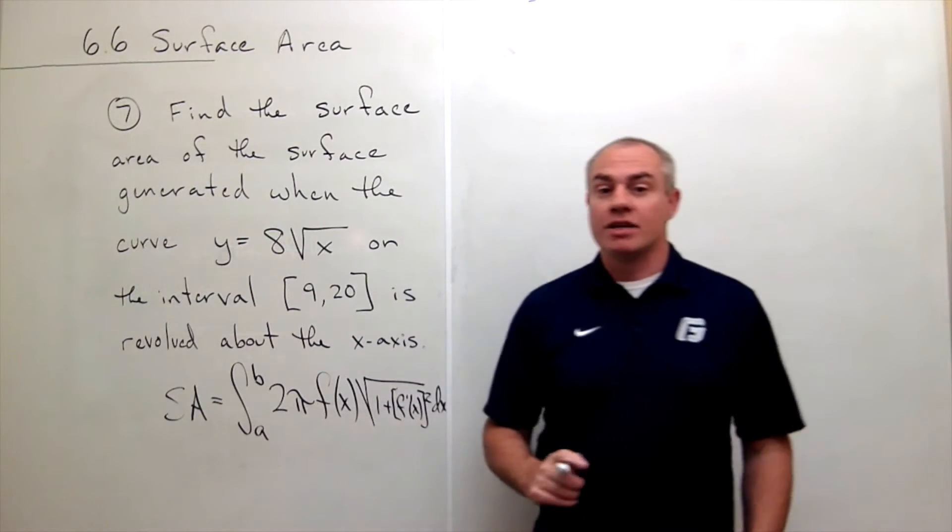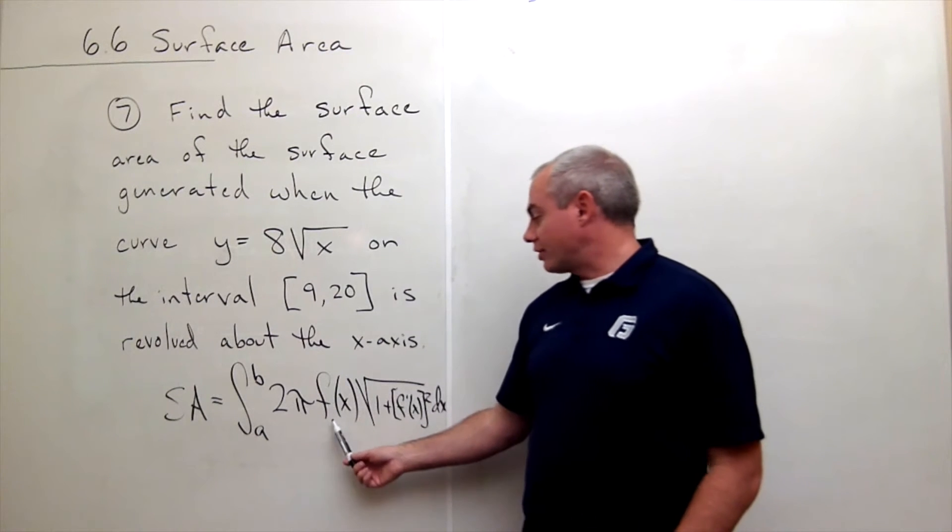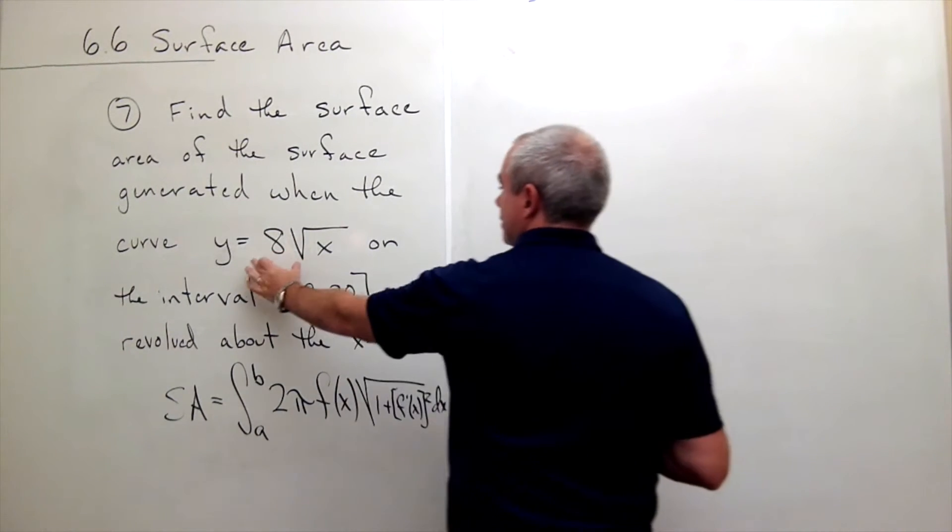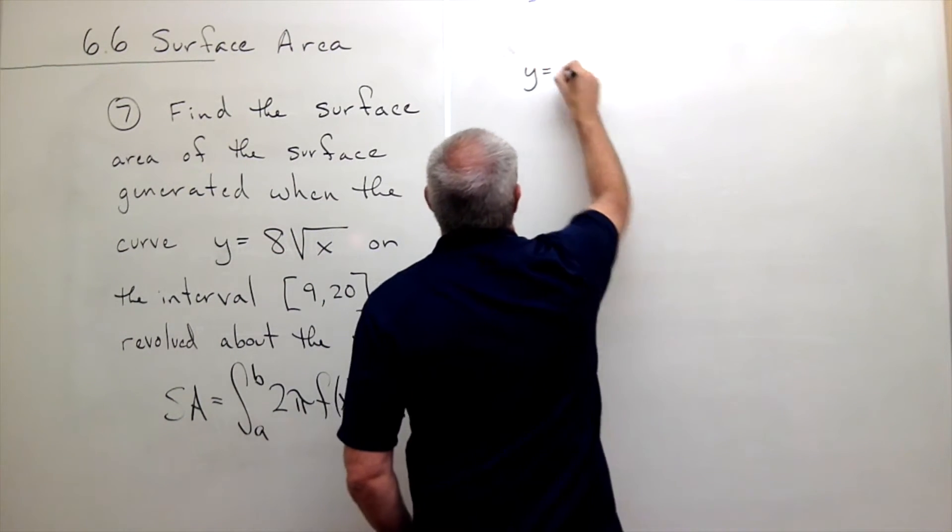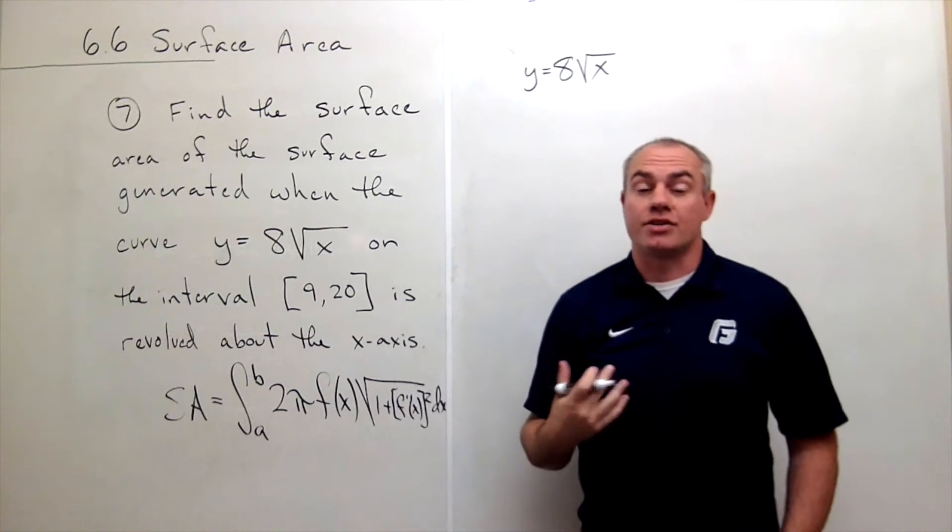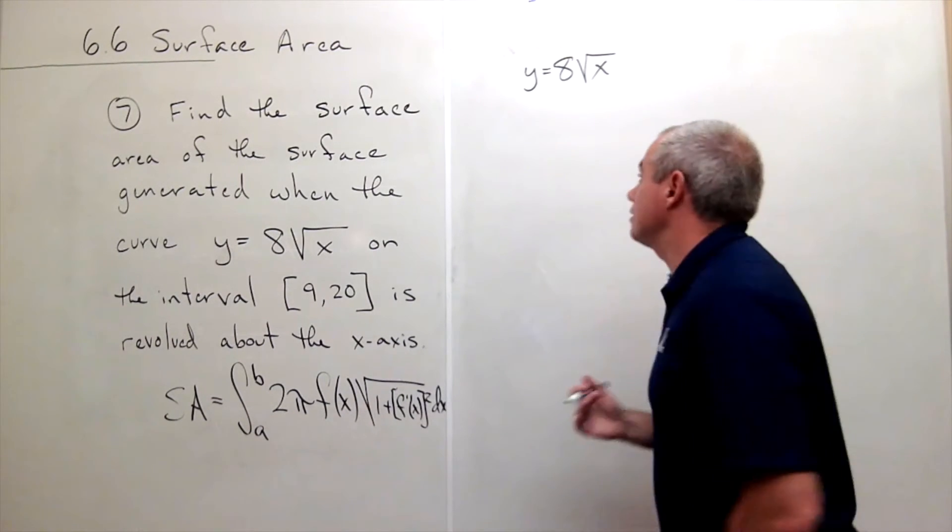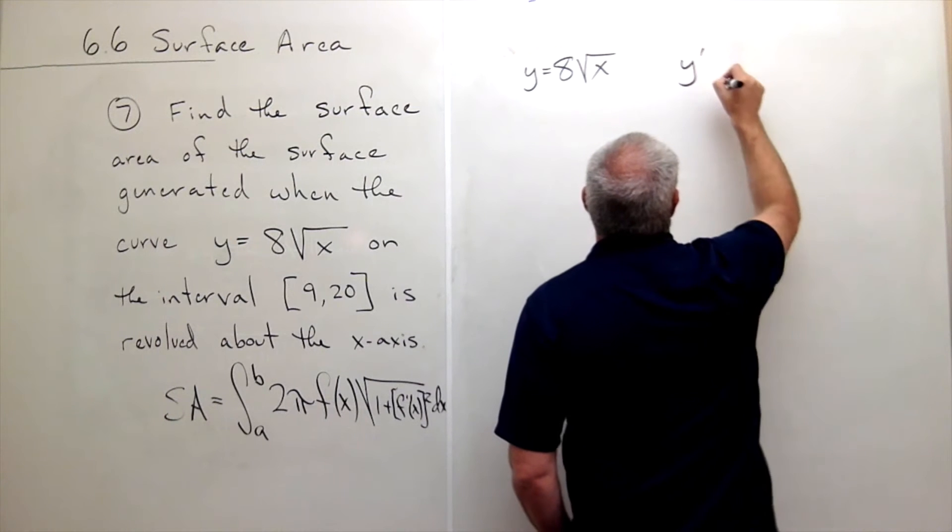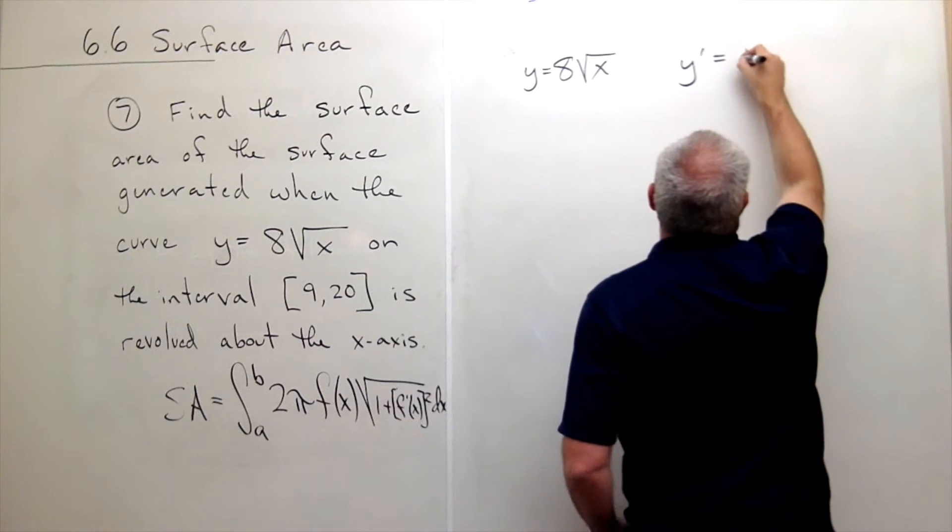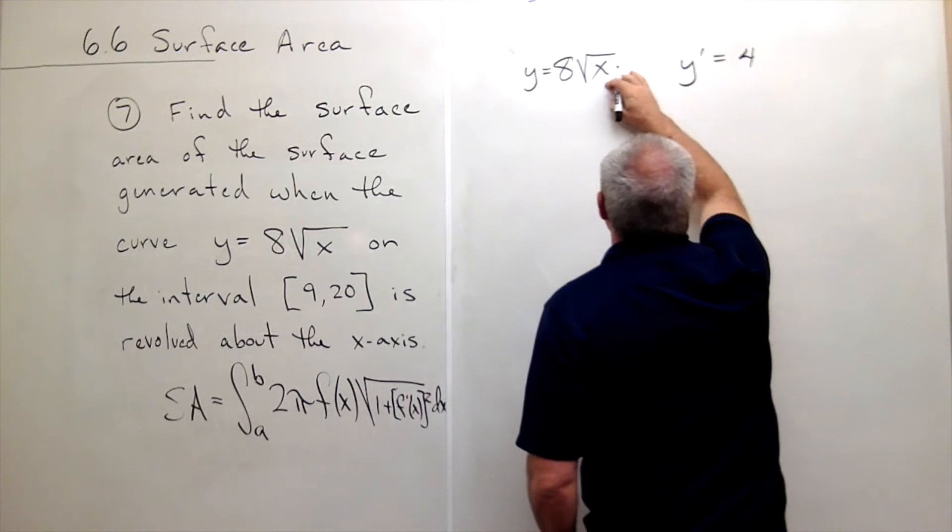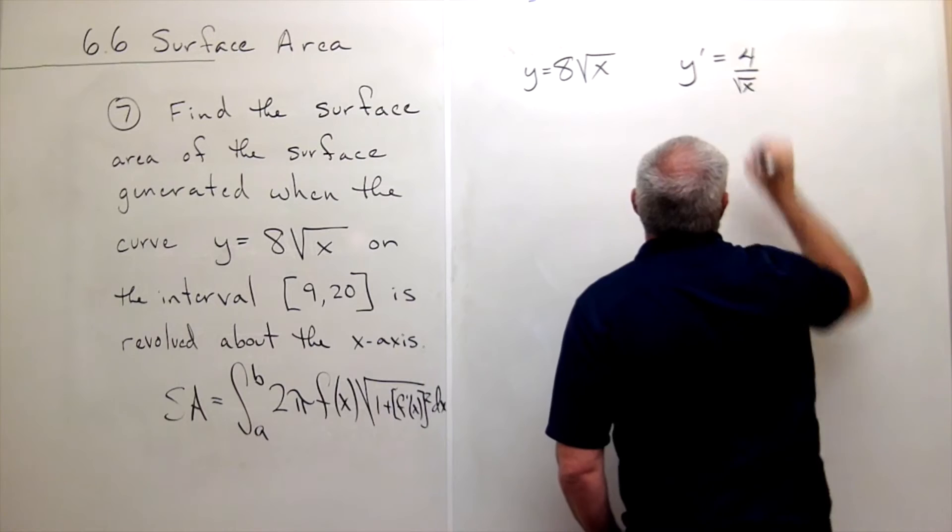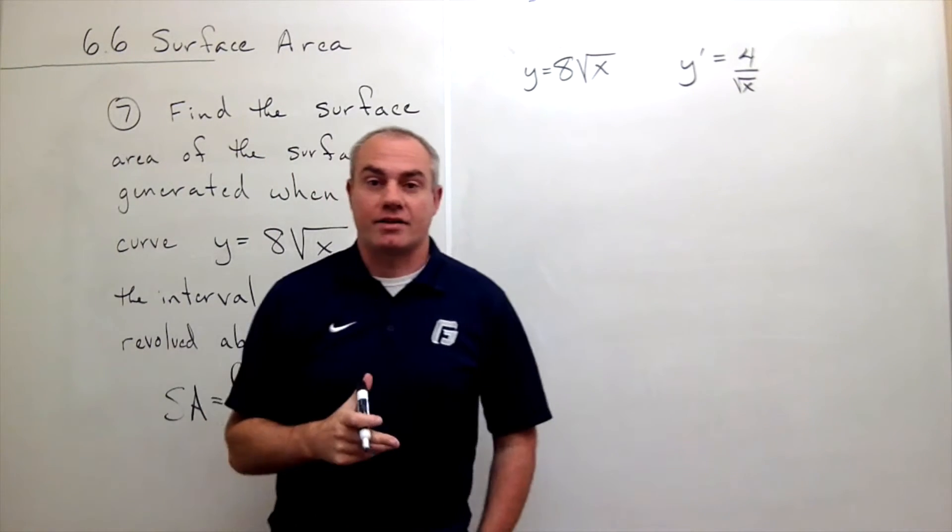In order to compute surface area I need to know the function and the function's derivative. I already know what the function is in this case: y equals 8 times the square root of x. So I also need to know what my derivative function is. The derivative function y' is, I bring down the one-half and I get 4 and then it's x to the negative one-half. I could write it that way or I could say that it's 4 over the square root of x.